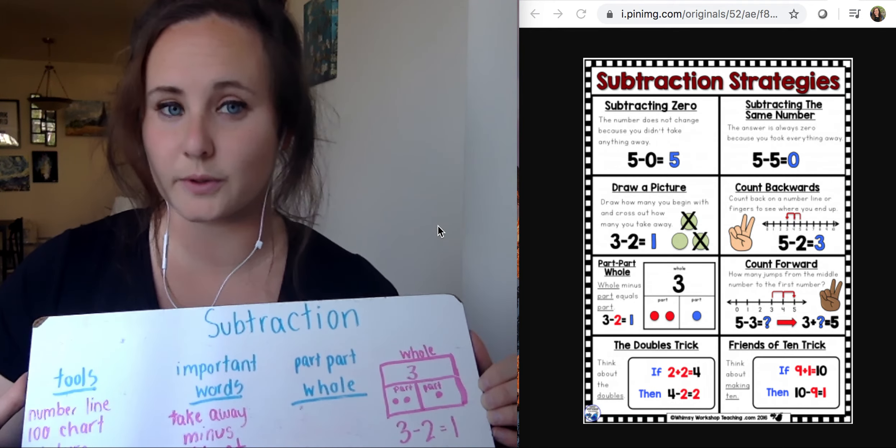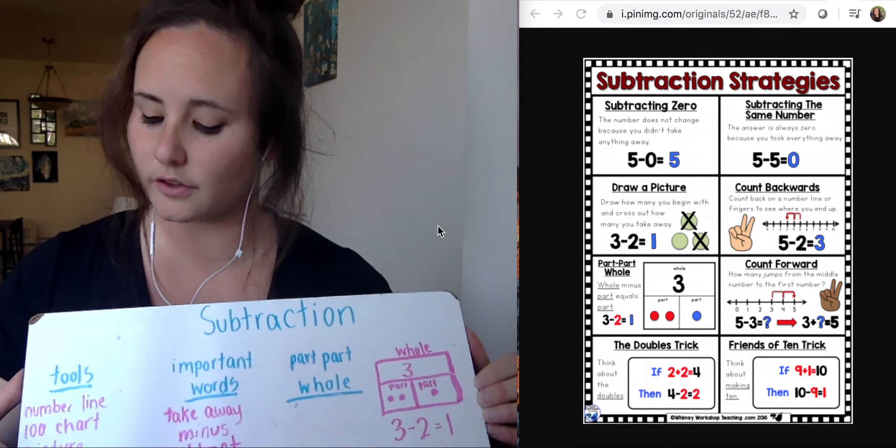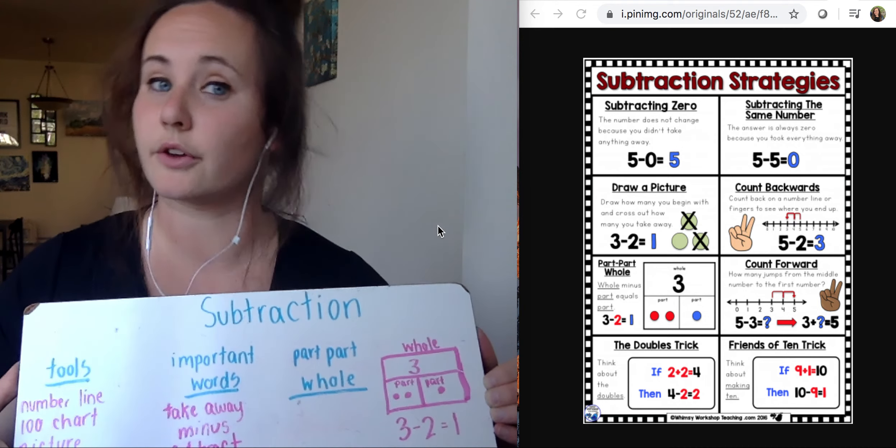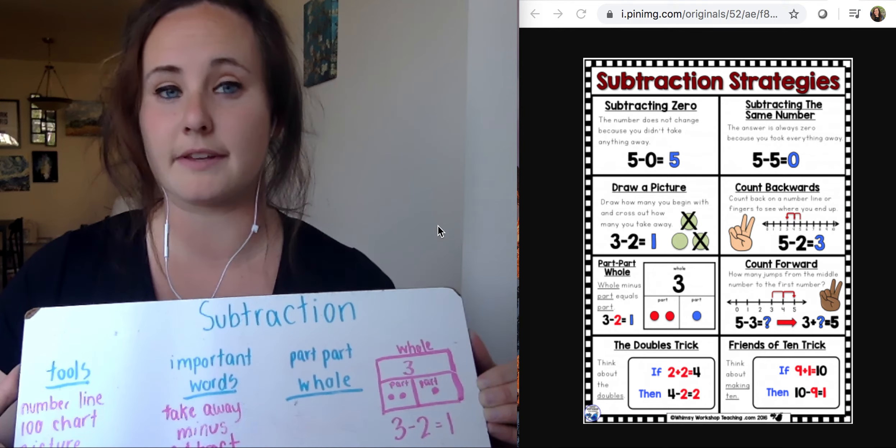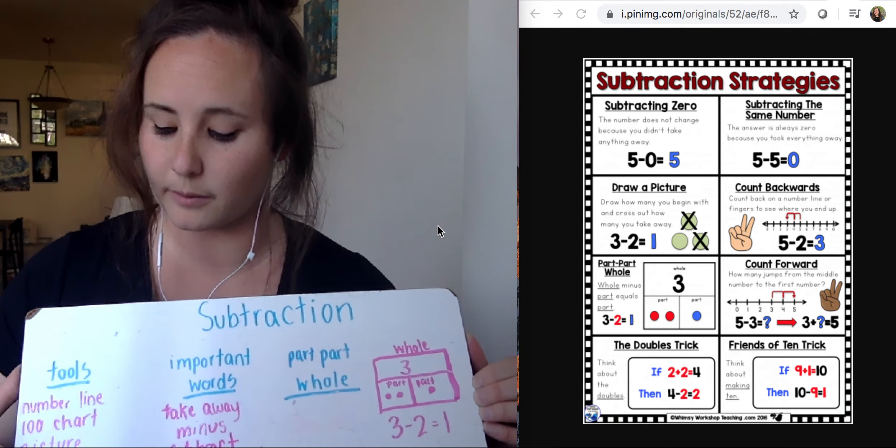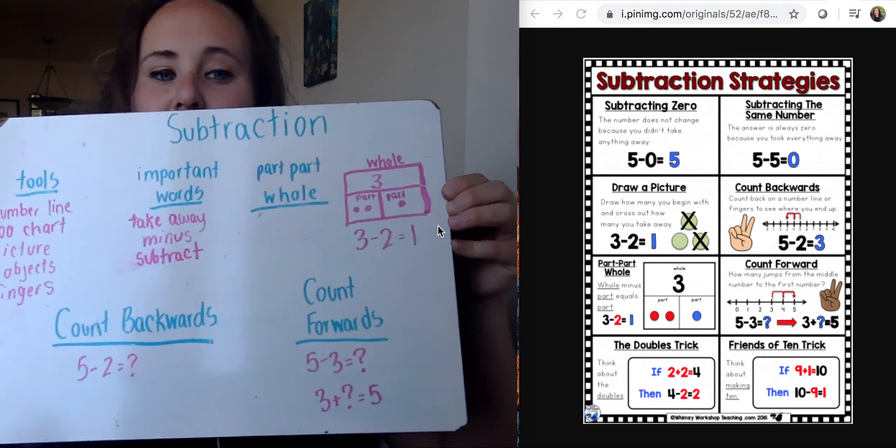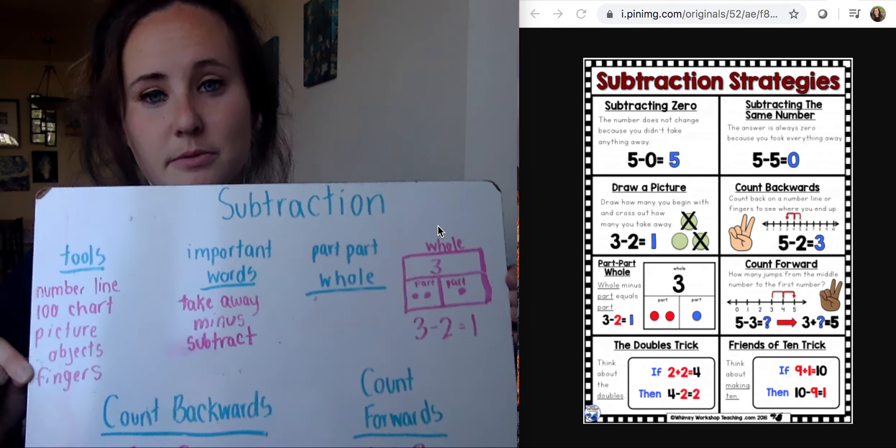Something else we used in school were objects. I know we used our counters and we used our unifix cubes, but if you're at home something maybe you can use to help you with your subtraction problems would be things like loose change or maybe some rocks that you find outside. And then something you always have with you are your fingers. You always have your fingers to help you with your subtraction and addition problems.